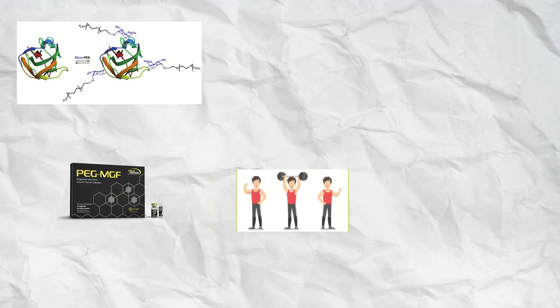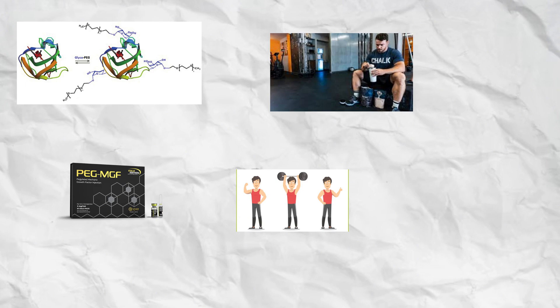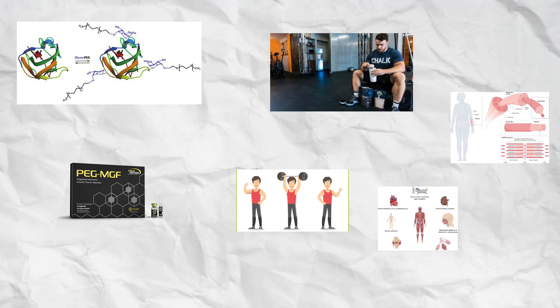PEG-MGF stimulates muscle repair, reduces recovery time, and may even protect against muscle wasting from overtraining or injury. In bodybuilding, it's often used post-workout to maximize the recovery window and enhance muscle hypertrophy. However, evidence in humans remains limited, and improper dosing may cause imbalanced muscle growth or tissue swelling.